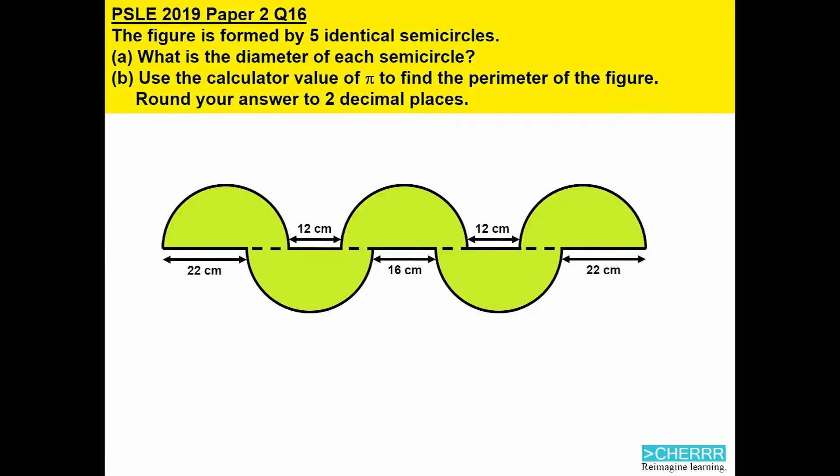PSLE 2019, paper 2, question 16. The figure is formed by 5 identical semicircles. A, what is the diameter of each semicircle? B, using the calculator value of pi to find the perimeter of the figure. Round your answer to 2 decimal places.